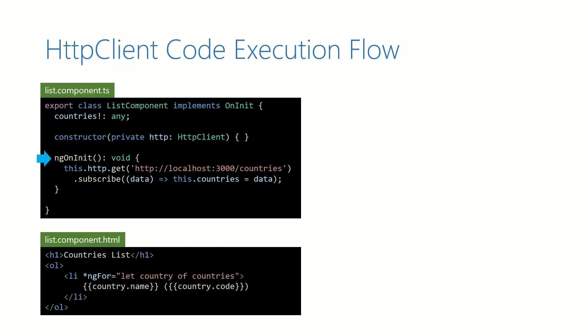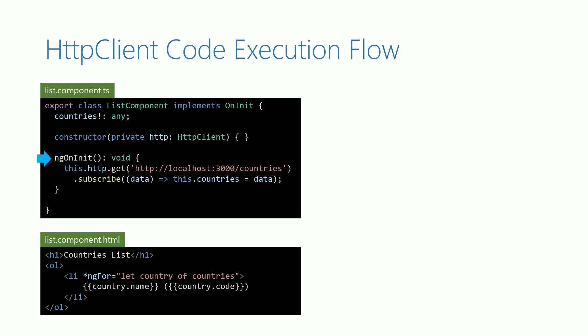In ngOnInit, this.http refers to the HTTP client service. In the HTTP client object, the GET function is called, passing the REST API endpoint as an input parameter. This initiates the call to the respective backend REST API endpoint.